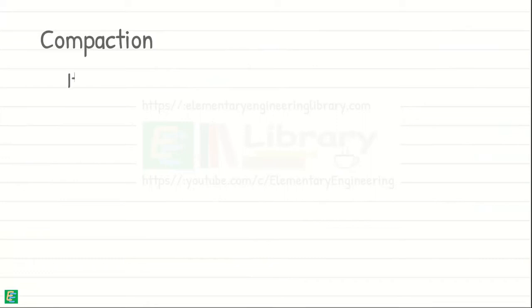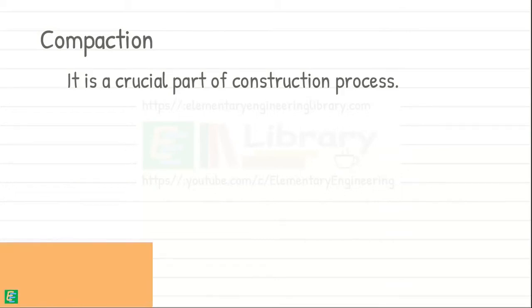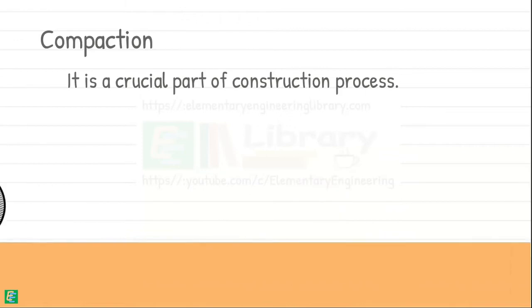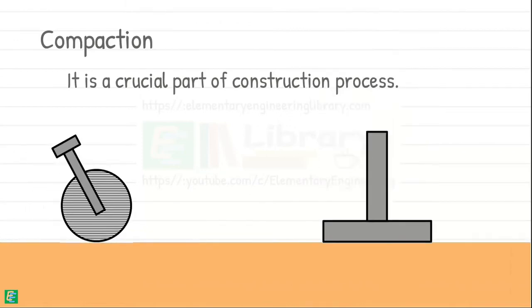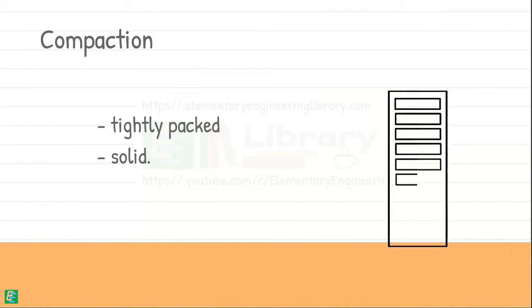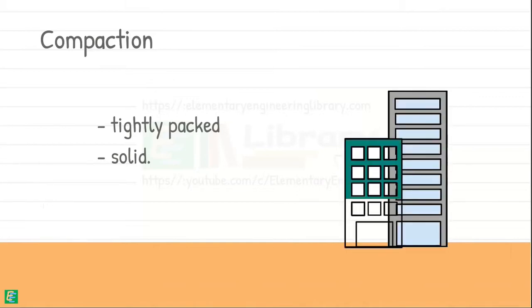Soil compaction is a crucial part of the construction process. It is the process of pressing the soil by mechanical methods such as rolling and tamping. By compaction, we make soil more tightly packed and solid and provide a strong foundation for the structures to be built upon.